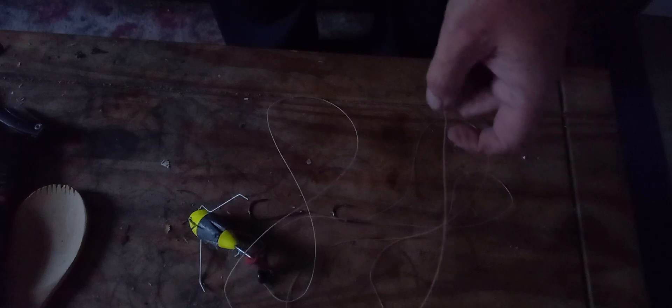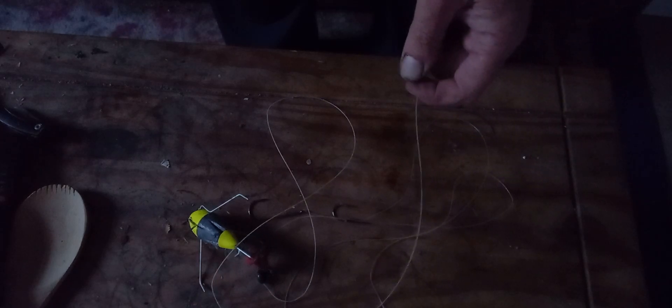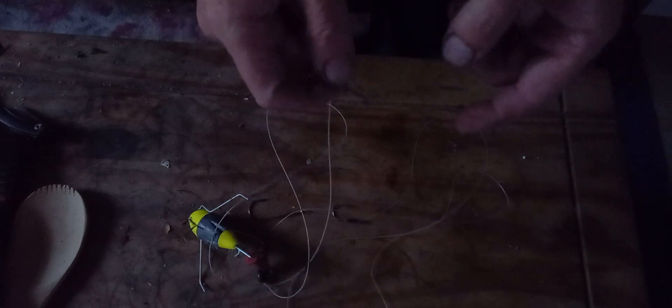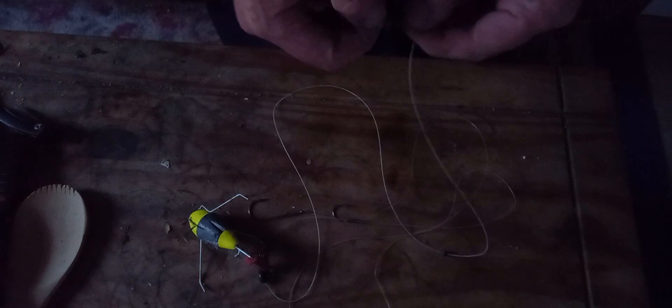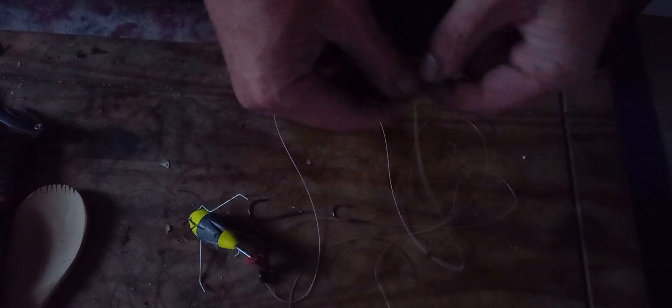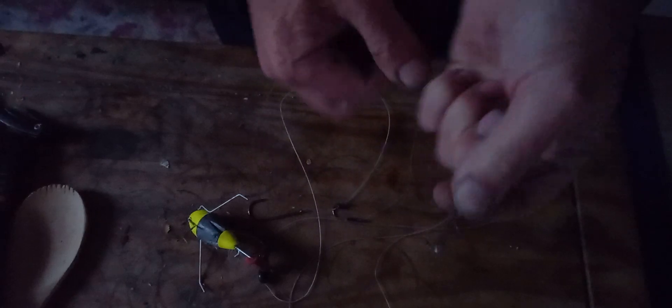I use two hook flappers. I've just never had anything on top hooks. On two hook flappers. All the fish on two hook flappers have all been on the bottom hook. Including the other bass that I caught as well. On the two hook flapper. On the bottom hook. Whiting and Konga bottom hook.